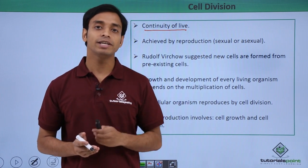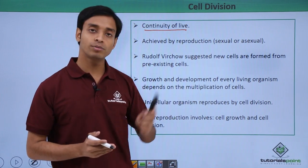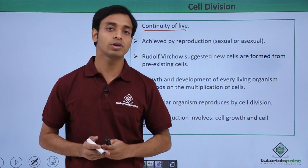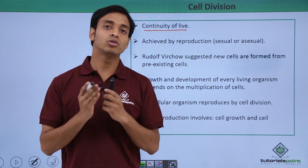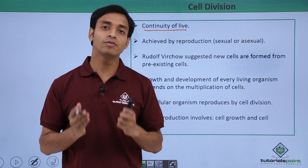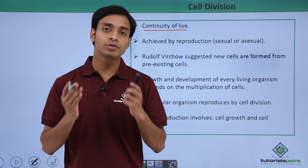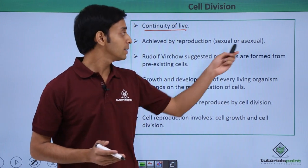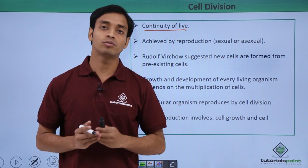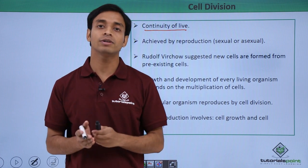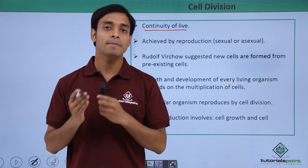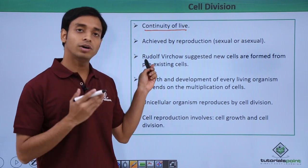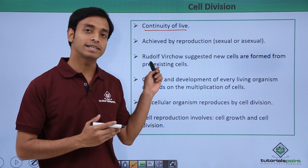This reproduction can happen in two types: the sexual mode of reproduction or the asexual mode of reproduction. The sexual mode of reproduction involves the fusion of male and female gametes, whereas the asexual mode of reproduction does not involve the fusion of male and female gametes.